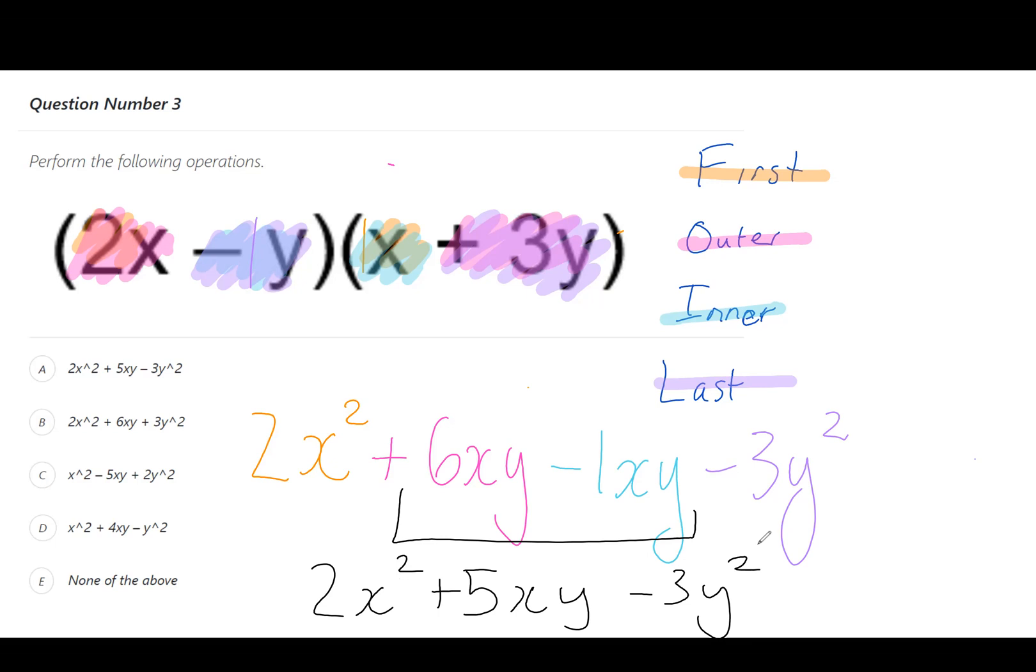Therefore our answer is 2x squared plus 5xy minus 3y squared. Now in a computer squared's written as an arrow than the number, so this would be the same as the answer of A.